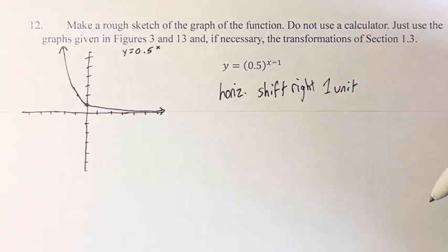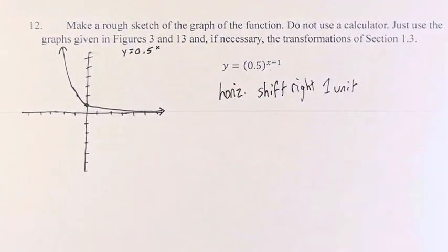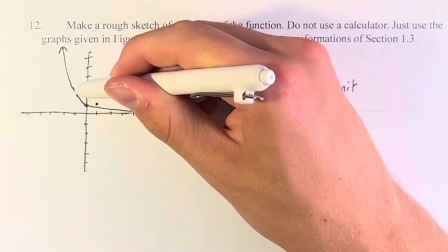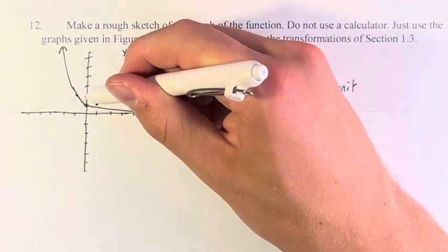And like we said, it's 1 unit. So we are shifting this function 1 to the right. So we have two important points. We have 0, 1 becomes 1, 1. And negative 1, 2 becomes 0, 2.